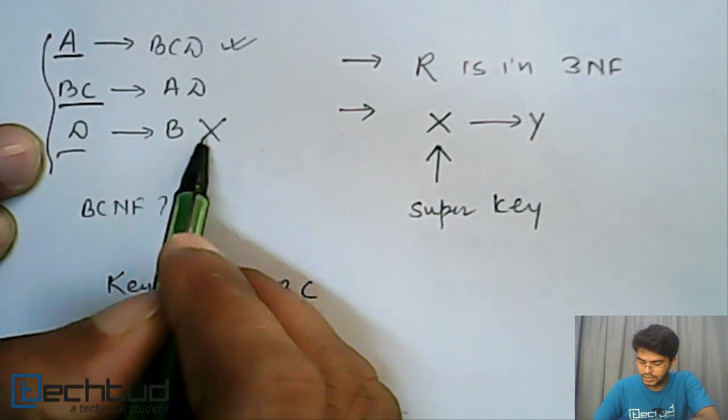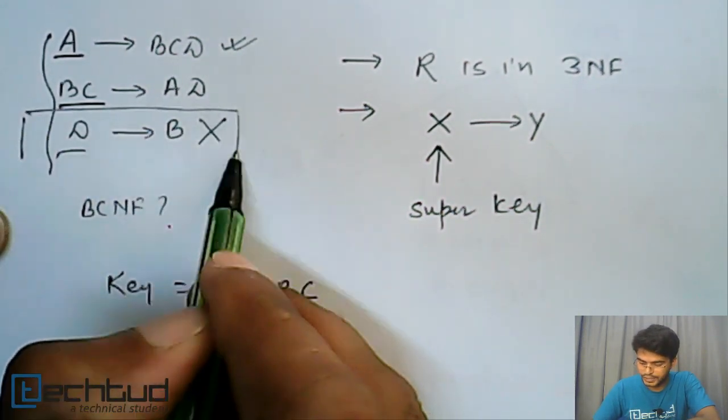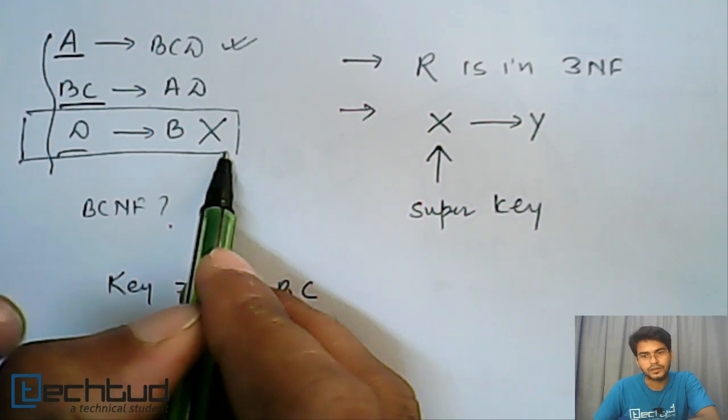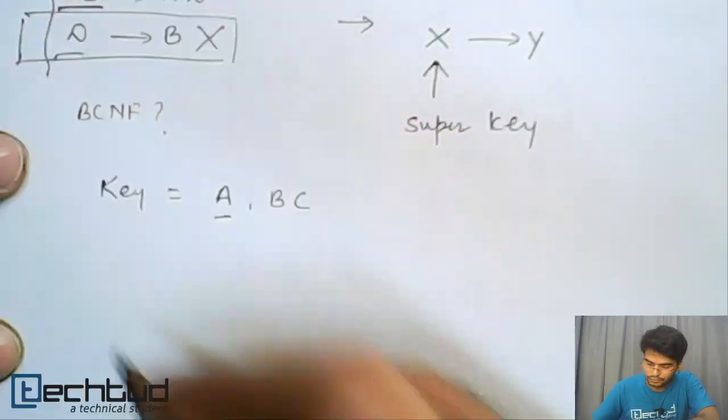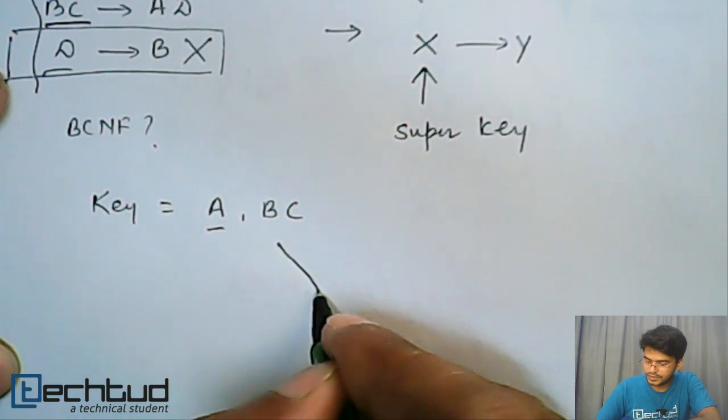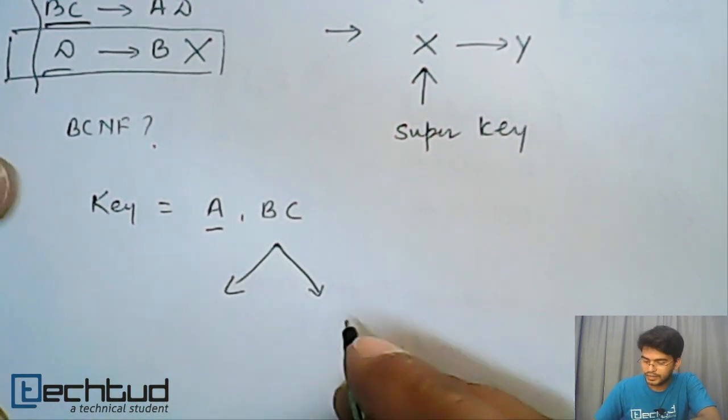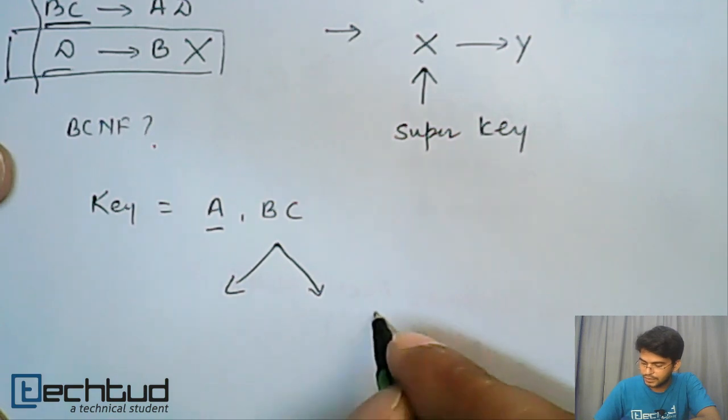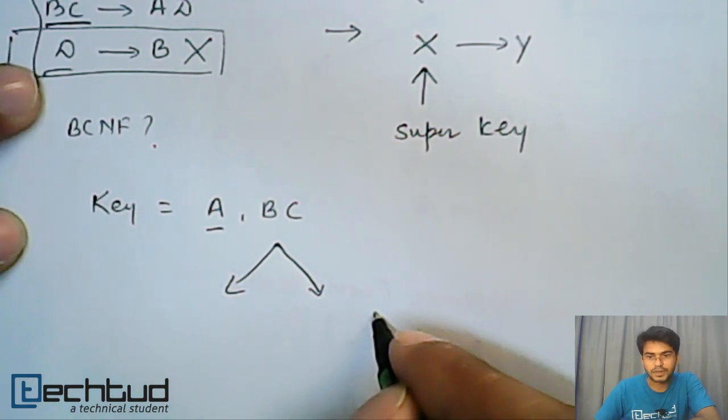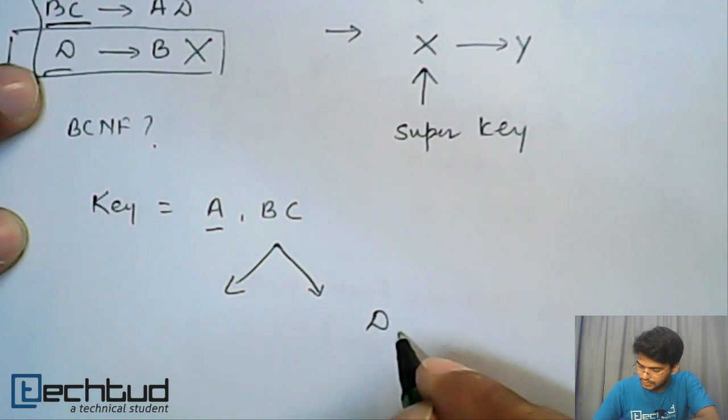D is not a key, so this functional dependency is violating our condition. So to convert it into BCNF we will break this, and what will be the method of breaking: we will keep D and B in separate table, that is D determines B.